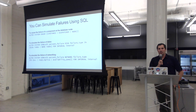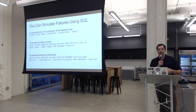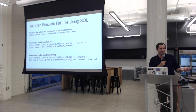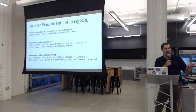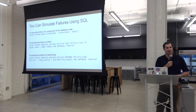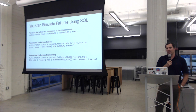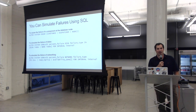One thing customers running RDS in multi-AZ mode have asked for is a way to simulate failover to test their SLAs and see how their app reacts. With Aurora, we've actually created some DDL extensions — ALTER statements — that let you simulate failures using SQL. So you can test your failover mechanism and observe how your application will behave when these events actually occur.